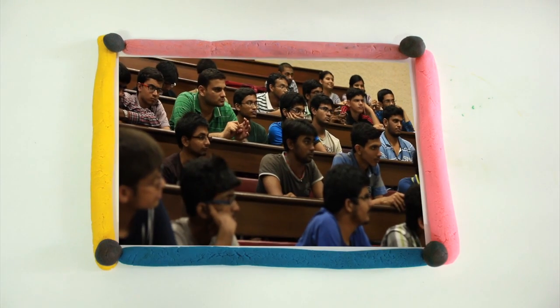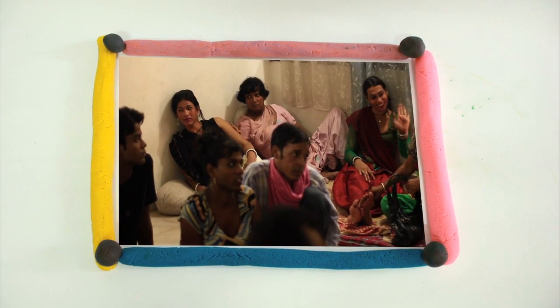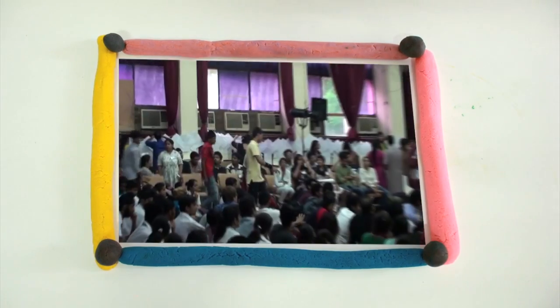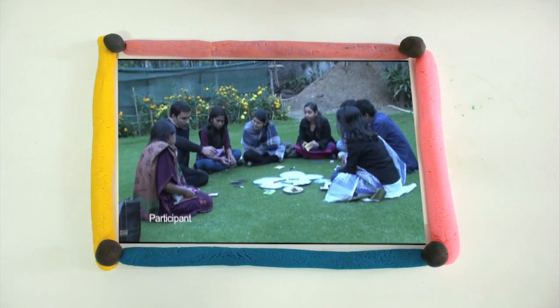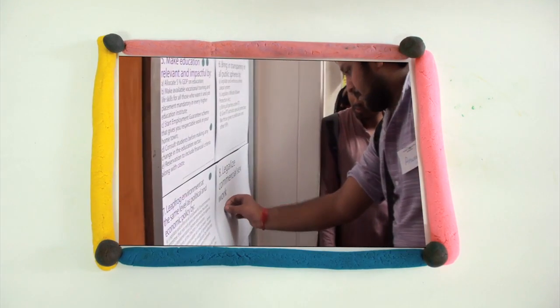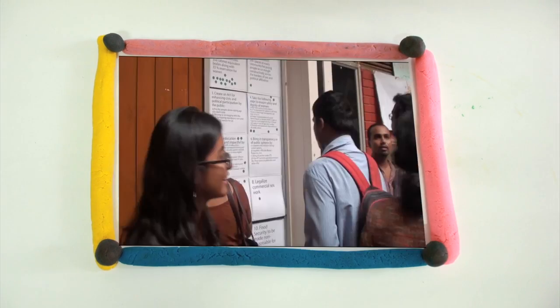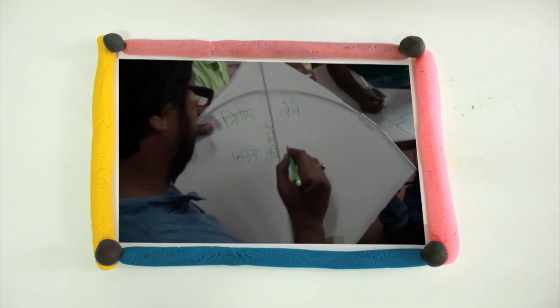To celebrate the overwhelming response the Unmanifesto campaign has received so far, an event was held at Yuva Kendra on the 19th of August which saw 400 young people come together to vote for the top three promises and write more of their own in a vibrant seminar. It included puppet theater, great music, and clown theater as well.